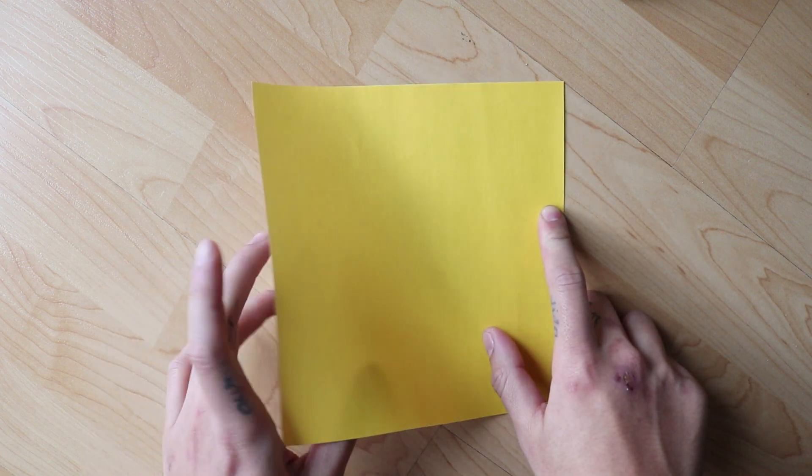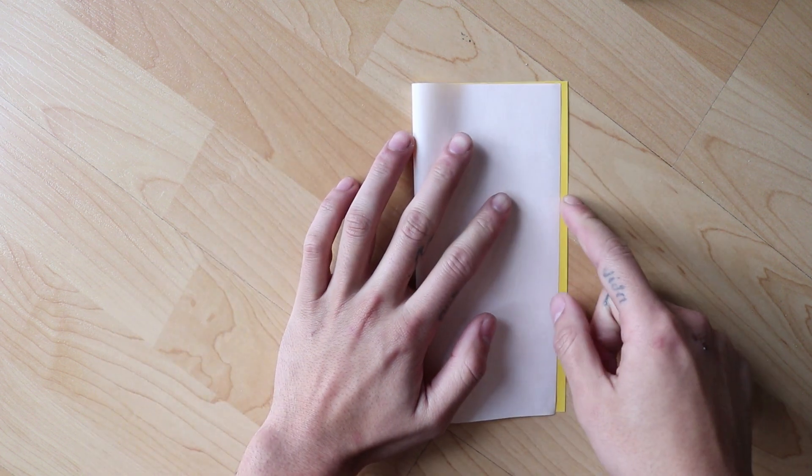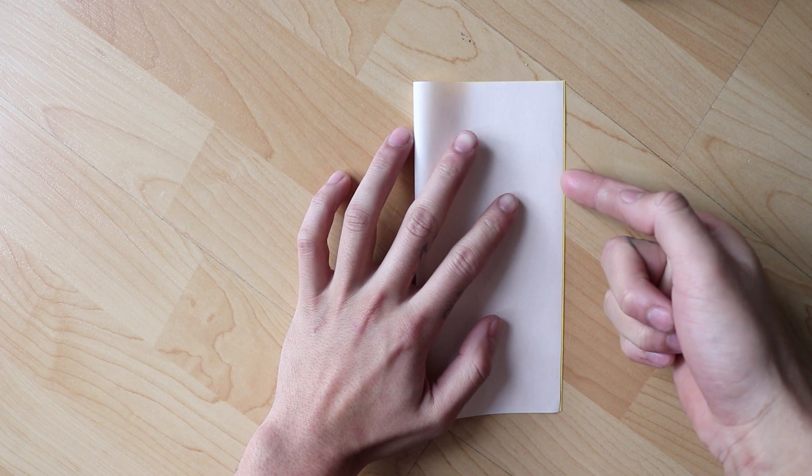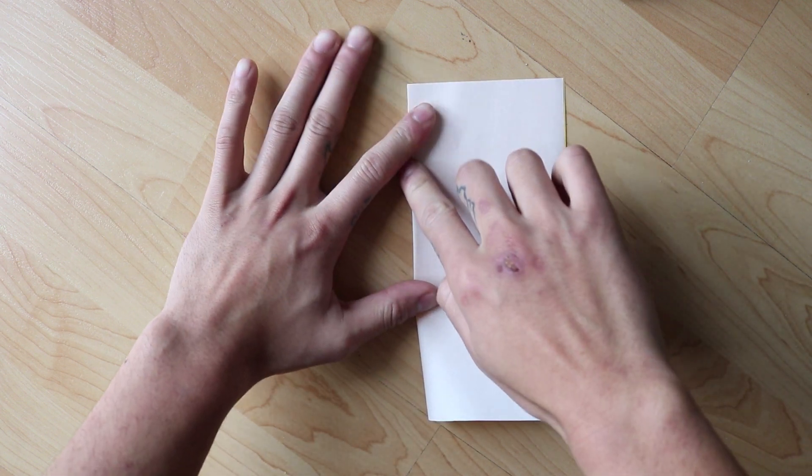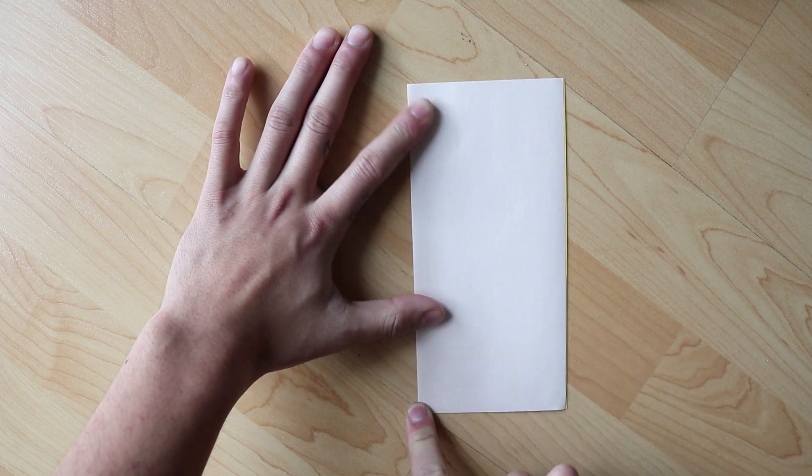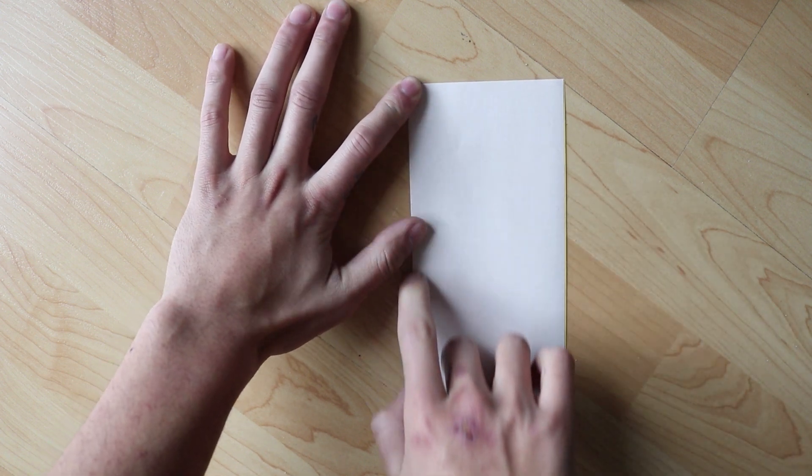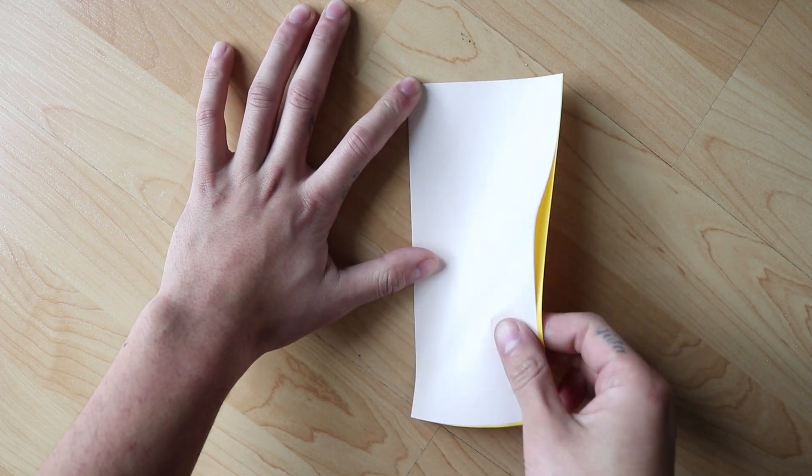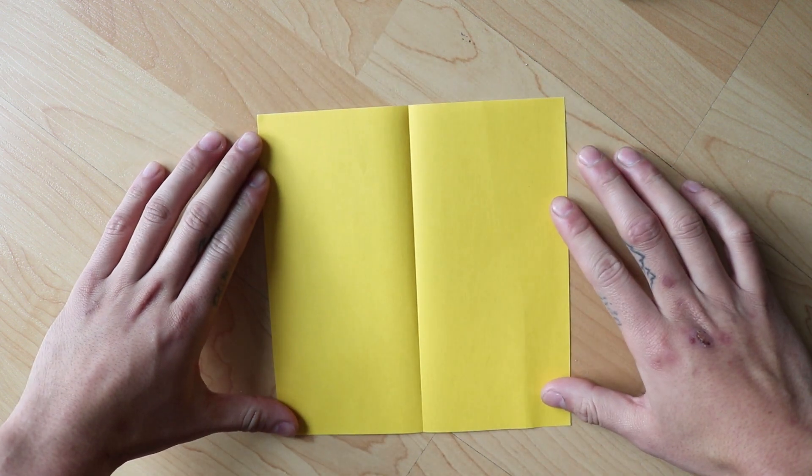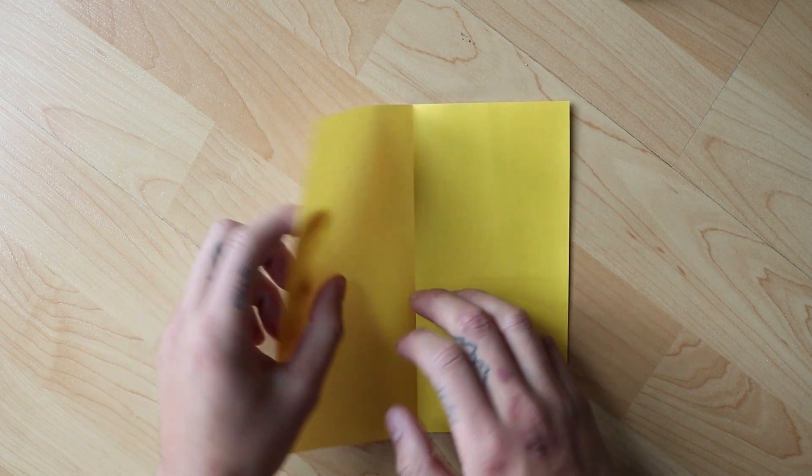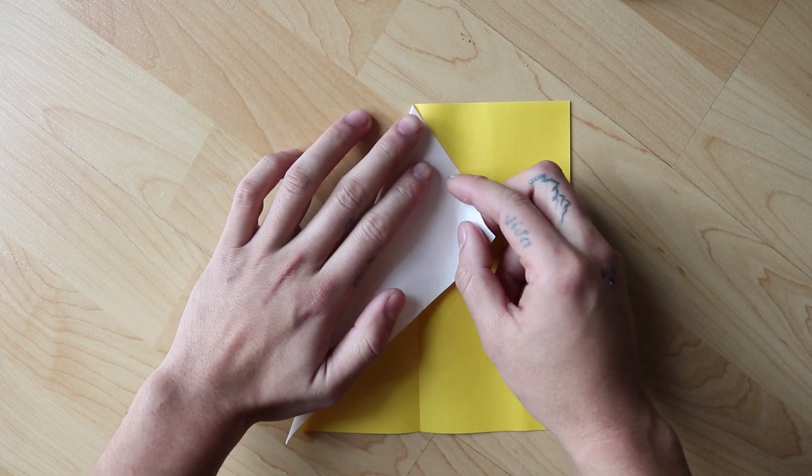Folding a golden rectangle is actually pretty easy. First, we crease the diagonal of one of the squares formed. Then, we crease the diagonal of one of the rectangles formed.